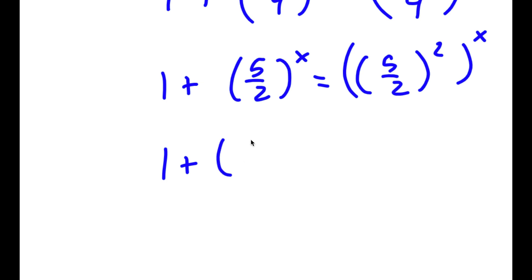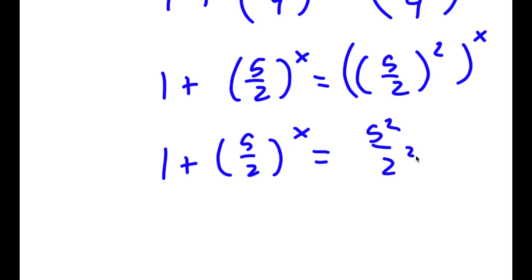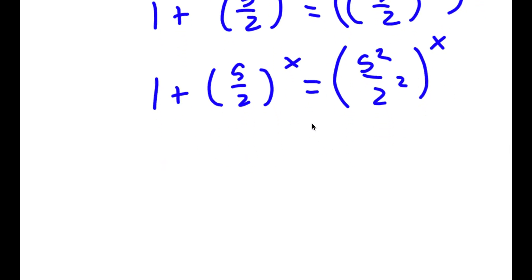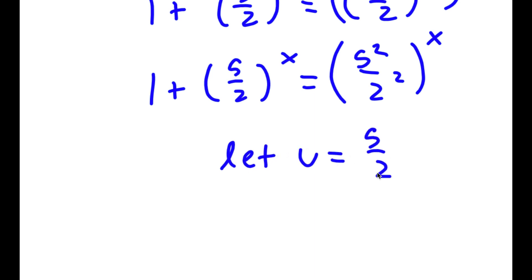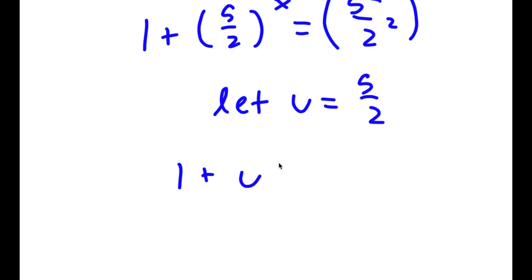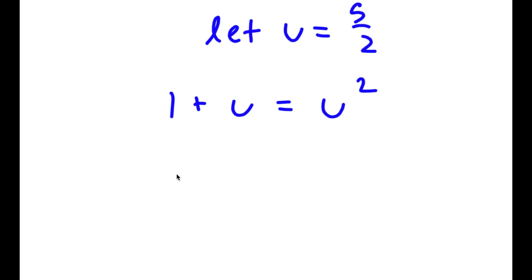And 5 over 2 squared to the power of x is the same thing as 5 squared over 2 squared to the power of x. So now I'm going to let u equal 5 over 2 to the power of x. So now I have 1 plus u is equal to u squared, and if I rearrange this, I get u squared minus u minus 1 is equal to 0.